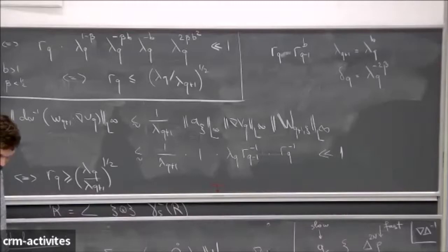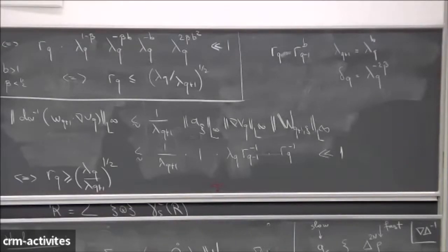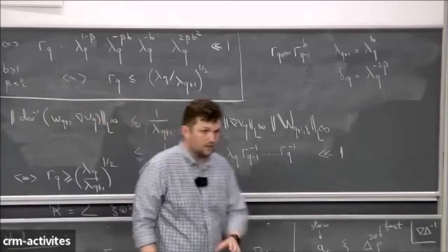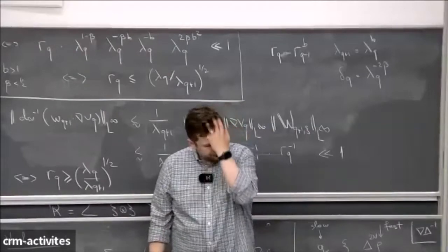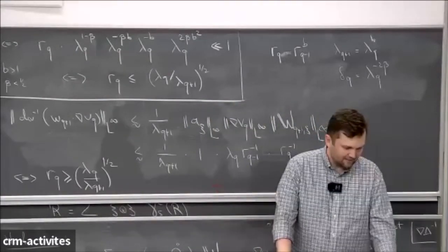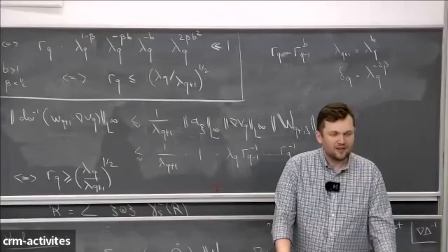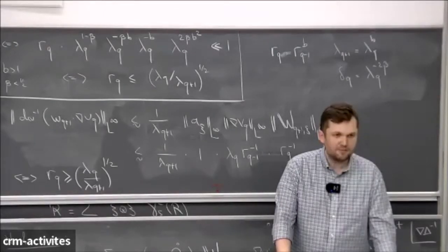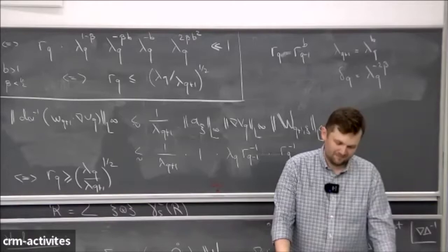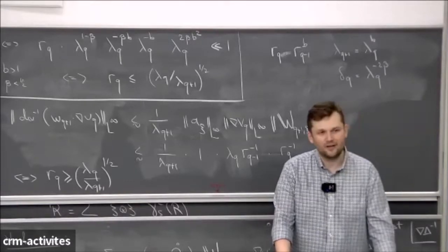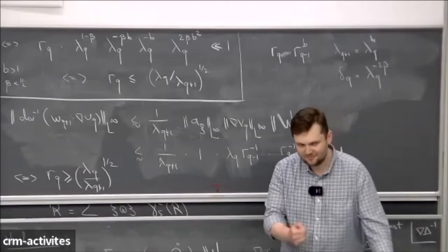A question about whether there's a physical interpretation of the one-half intermittency rule: yes — in Frisch's beta model, this corresponds to dimension two, i.e., a monofractal scaling with dimension two as the dimension of the monofractal.